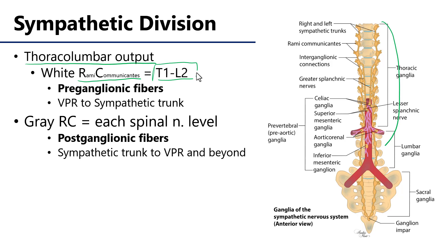It's the pre-ganglionic fibers which are originating in the spine and coming out into the sympathetic trunk where most of them are going to synapse in ganglia, which constitute quite a bit of the trunk. The connections of the white rami communicantes are between the ventral primary rami, or the VPR of the spinal nerve, and the sympathetic trunk.